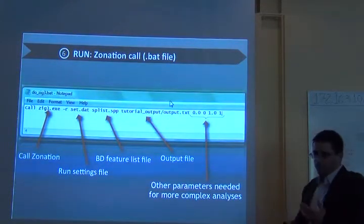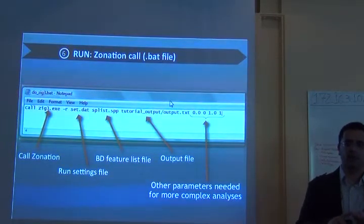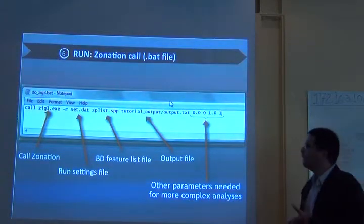So that's the third one. You need the rasters for each feature. You need the species list file. Then you need the run settings that tell zonation what it needs to do.